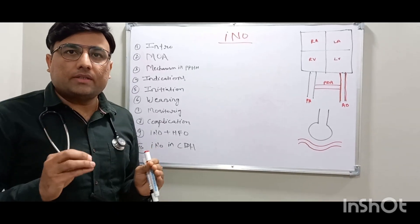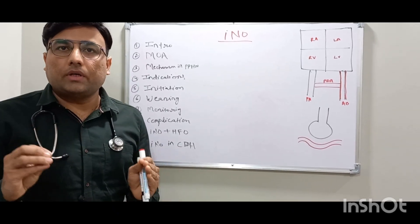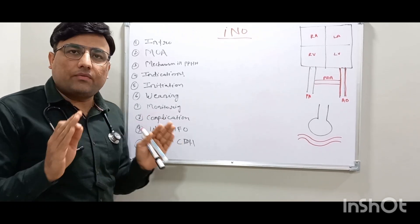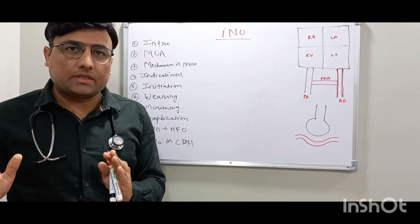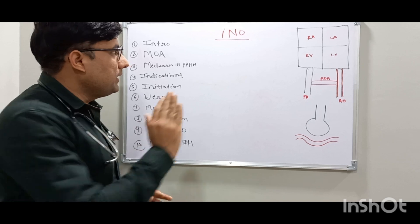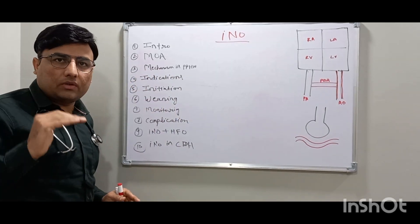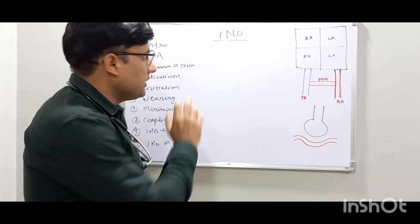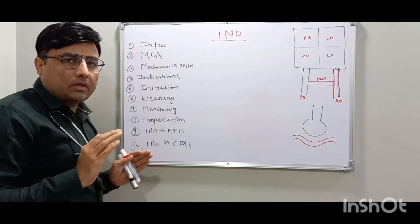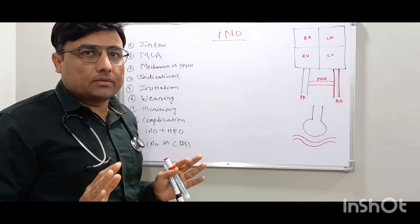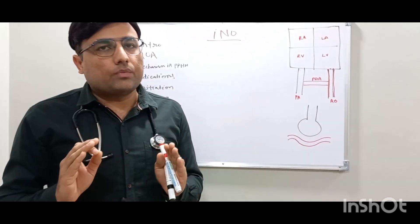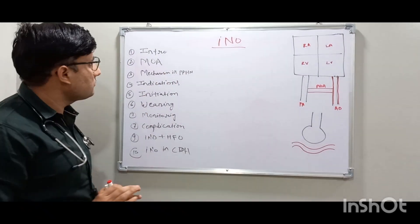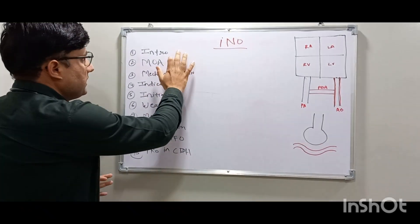Inhaled Nitric Oxide is a selective pulmonary vasodilator. It is selective because it does not affect systemic vascular resistance — it only reduces pulmonary vascular resistance and does not reduce systemic blood pressure. That is why we call it a selective pulmonary vasodilator. It is used in cases of hypoxemic respiratory failure and PPHN.